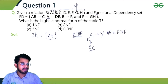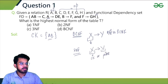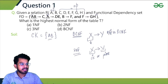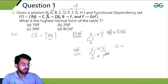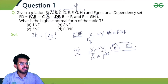What about 3NF? For 3NF, for any non-trivial functional dependency X to Y, either X is a super key or Y is prime. For the first FD, AB is a super key — satisfied. For A→DE, A is not a super key. Is D or E prime? D is non-prime and E is non-prime. So this FD satisfies neither condition — A is not a super key nor are DE prime attributes. The relation is also not in 3NF.